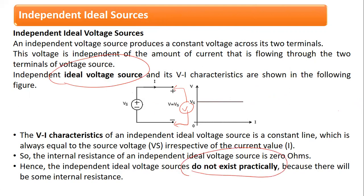If you measure the voltage across the two terminals of an ideal voltage source at any point in time, you will get the same voltage every time. Such voltage sources are known as ideal voltage sources. However, ideal voltage sources are hypothetical — they do not practically exist, because due to practical reasons the voltmeter will never measure exactly the same voltage as VS for infinite duration.